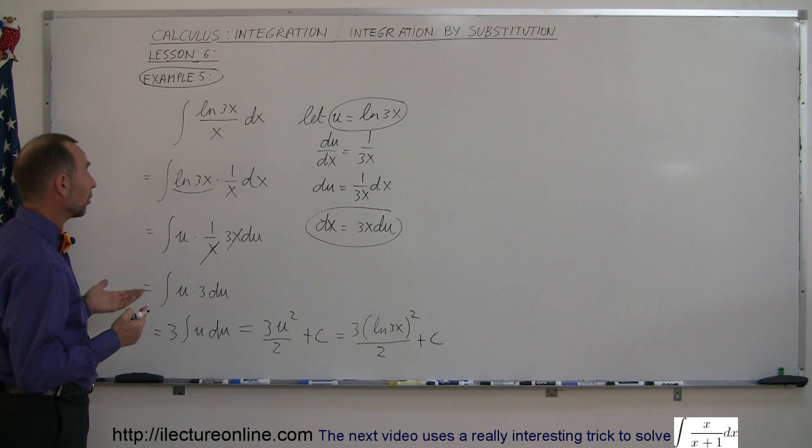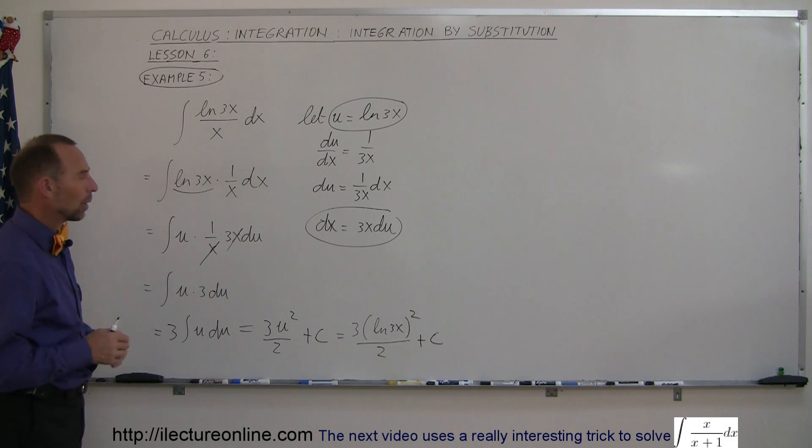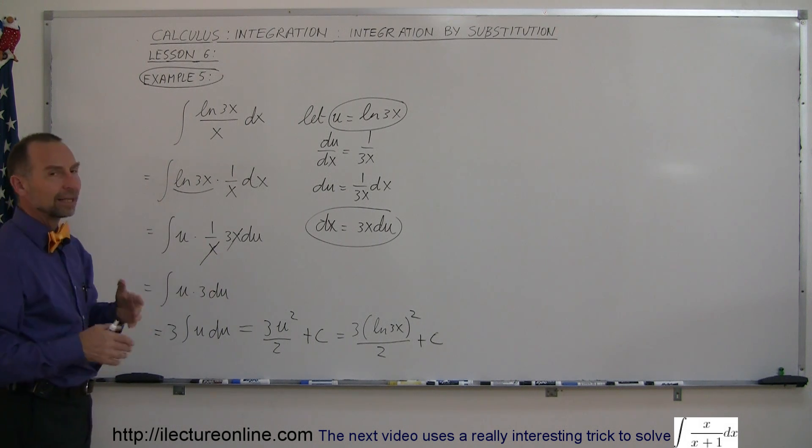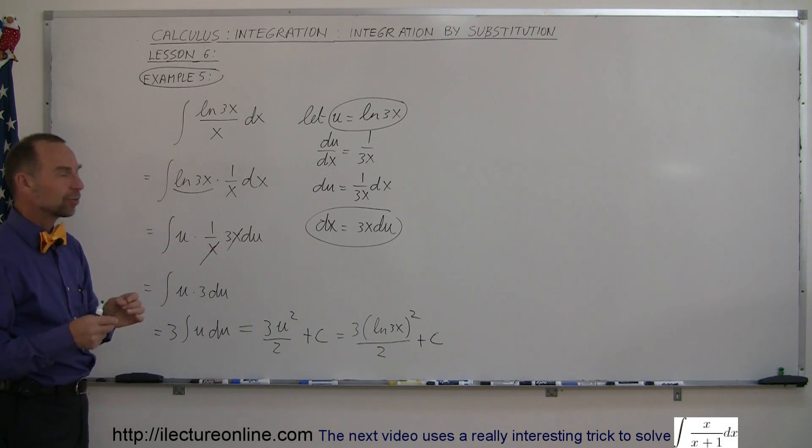So maybe you say, okay, I'm going to replace 1 over x by u, so substitute that way. And when you try that, it probably won't work. And then maybe I'll substitute x for u and try that. And that probably won't work. Maybe you'll substitute 3x for u and that won't work. So sometimes you try different things.